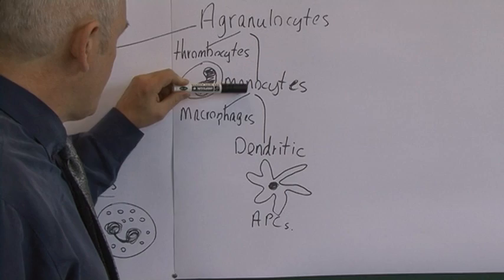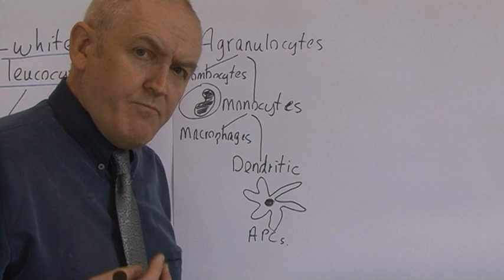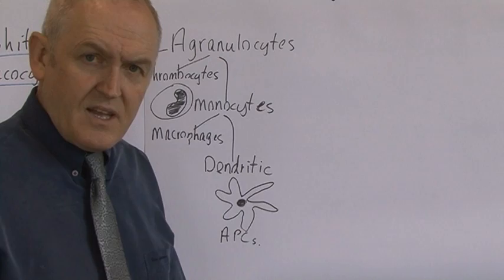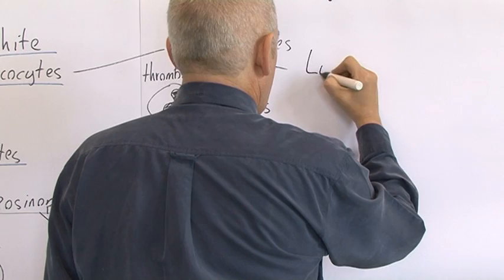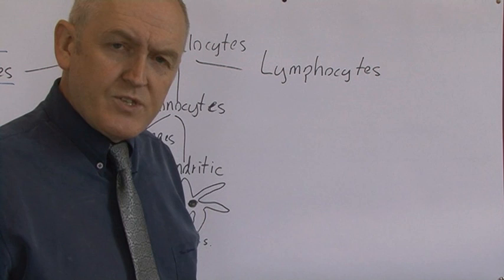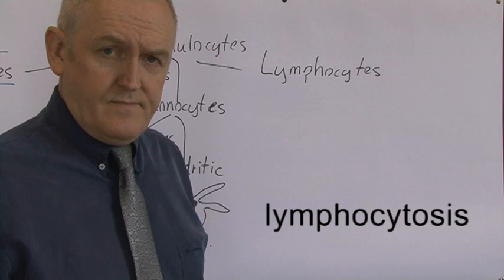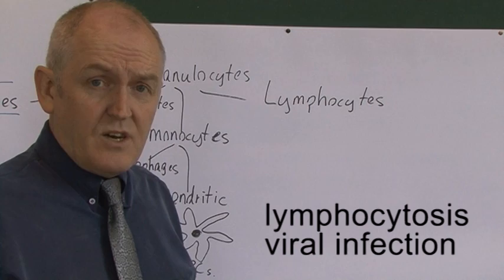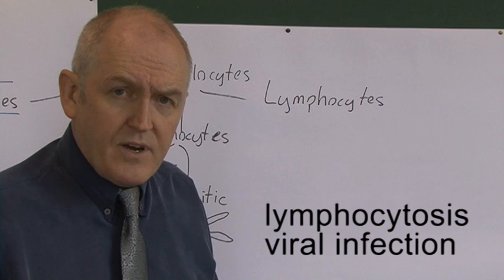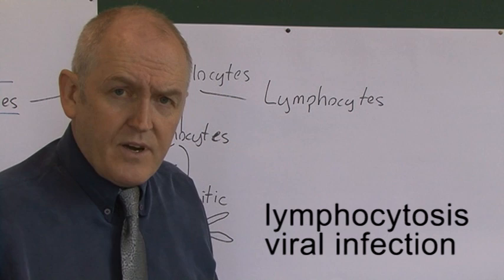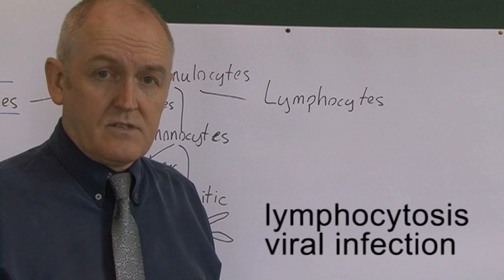The other big classification of agranulocytes, also found in lymphatic tissue, is lymphocytes. Too many lymphocytes is called a lymphocytosis, which typically occurs with a viral infection. It is good to get a lymphocytosis because it's the lymphocytes that largely combat viral infections.